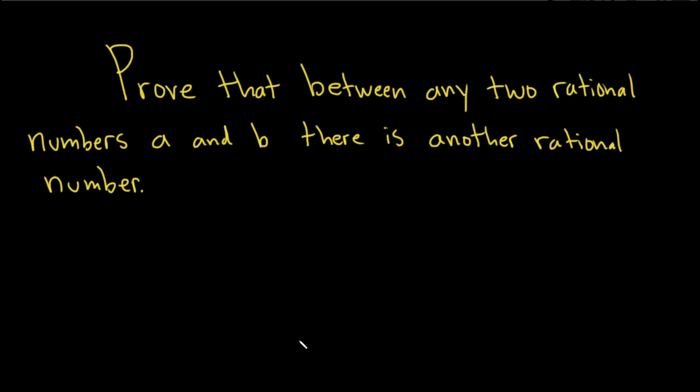To prove that between any two rational numbers A and B, there is another rational number. Let's go ahead and go through this proof.